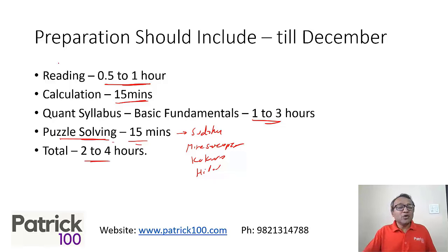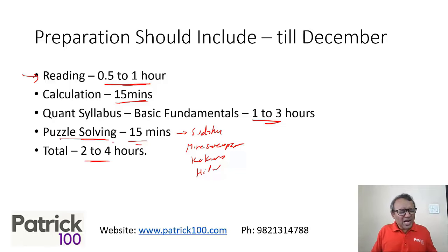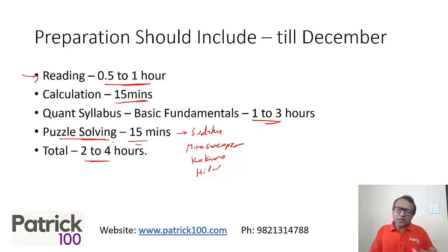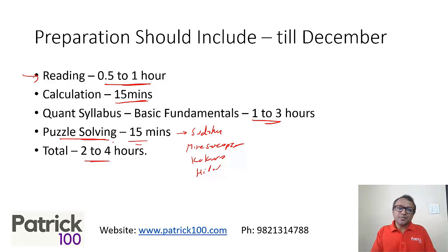For verbal, I'm not mentioning anything separately because reading will help you. Reading half an hour to one hour will ensure that your reading base is solid, because CAT is all about reading. Only if you feel you're not able to understand what you read, maybe work on vocabulary a bit. Don't do grammar right now. Reading is important as far as CAT verbal is concerned — it forms the base. Start with reading something you enjoy to create a good habit of reading, then you can move to other areas.